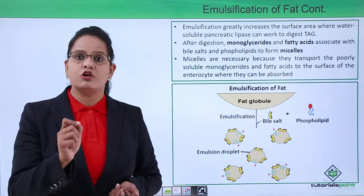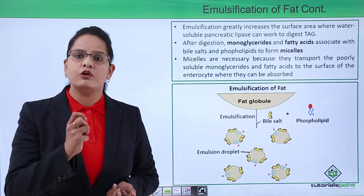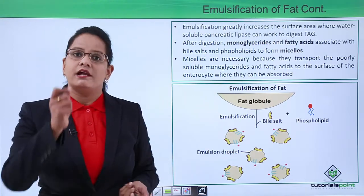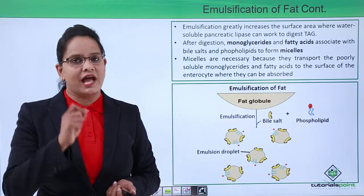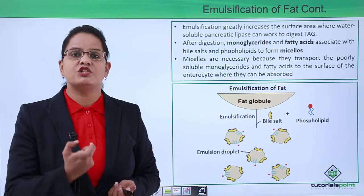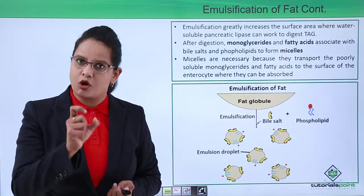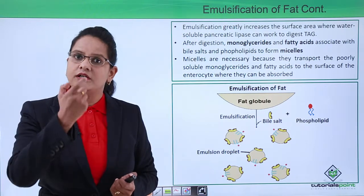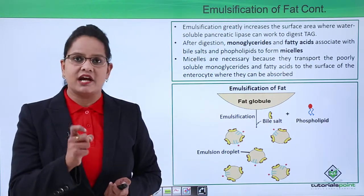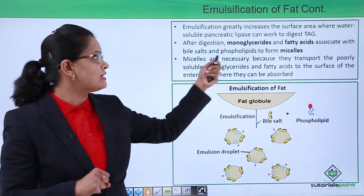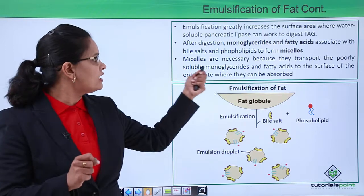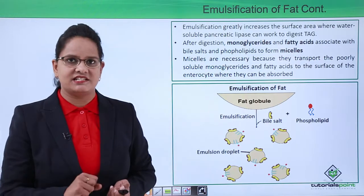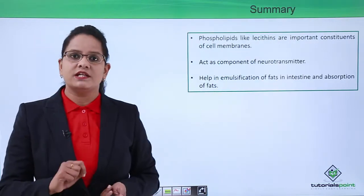After digestion, triacylglycerols — the large fat droplets — are broken down into emulsified fat droplets containing monoglycerides and fatty acids. These remain associated with bile salts and phospholipids and are now called micelles. Micelles are small fat droplets coated with phospholipids, making it easy for enterocytes (cells of the small intestine) to absorb them directly. Micelles transport the poorly soluble monoglycerides and fatty acids to the enterocytes for absorption.